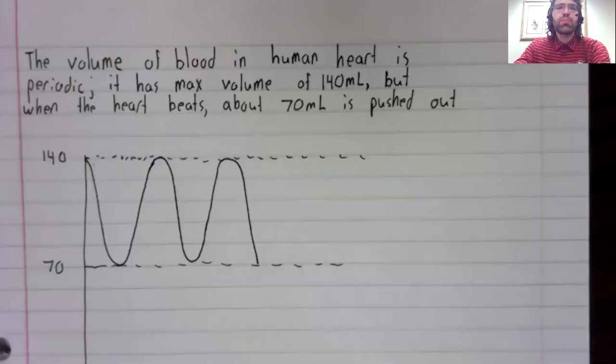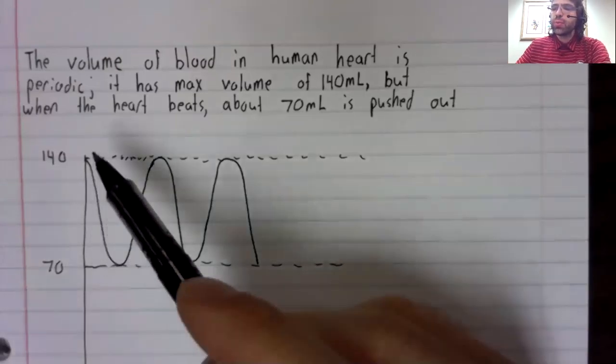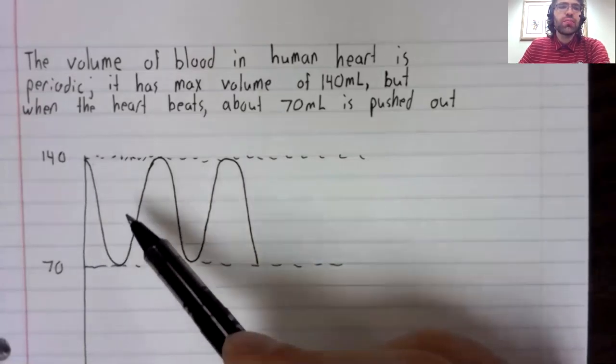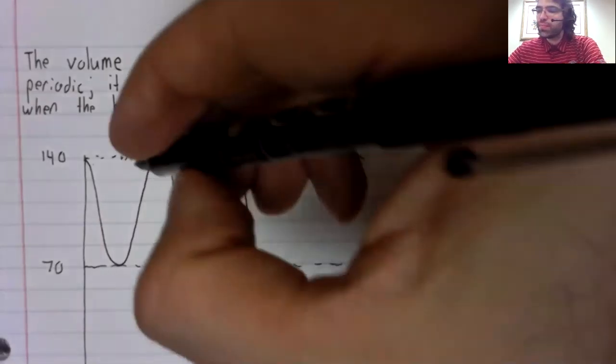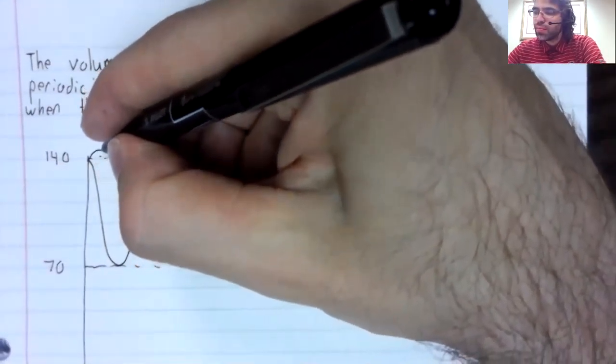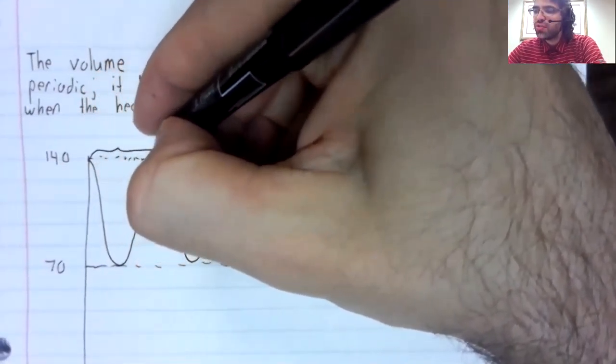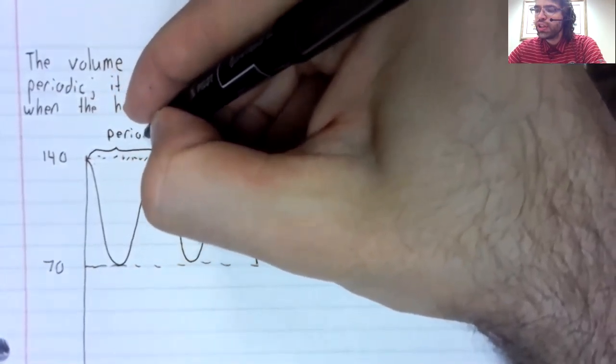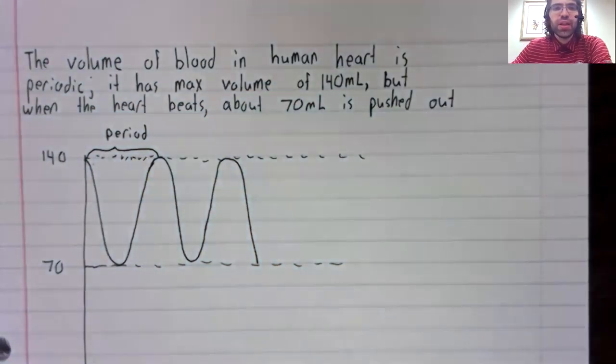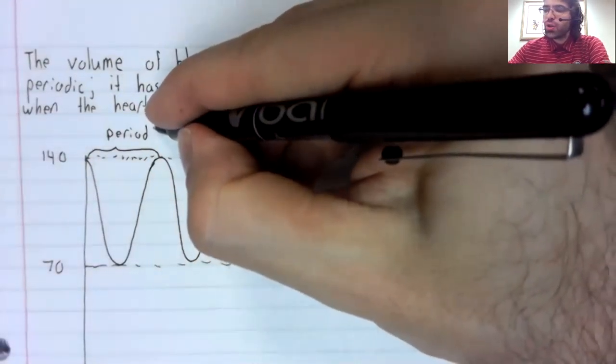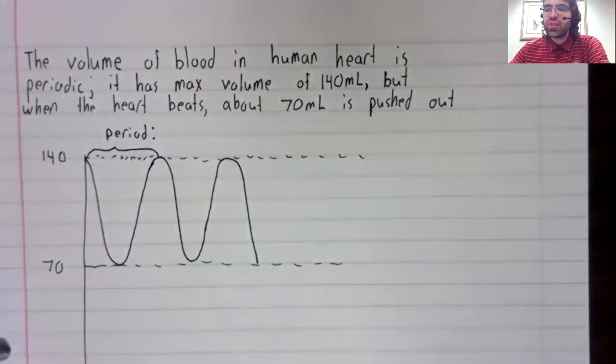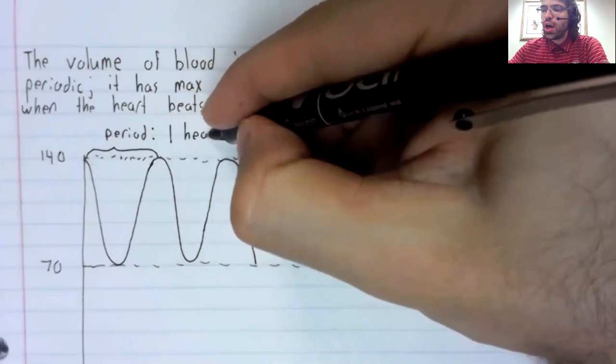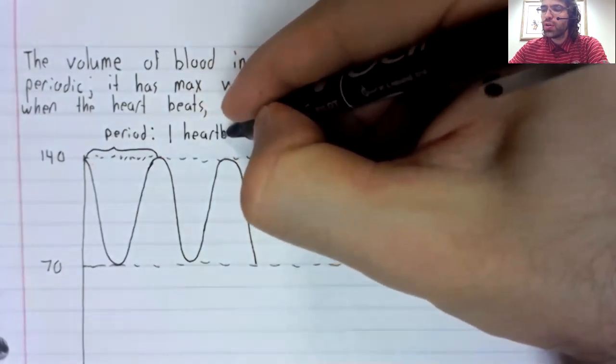The blood is then replenished. So we go from 140 to 70 and back again. This distance is the period. In physical terms, this distance represents one heartbeat.